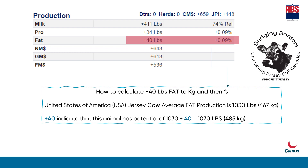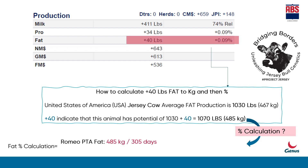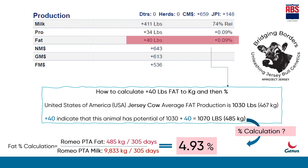Farmers also ask how much fat this is in percentage, since in India milk value is based on fat percentage. To calculate fat percentage, use this formula: take PTA fat, which is 485 kg, divide by PTA milk, which is 9,833 kg (the milk production of Romeo bull we calculated previously), then multiply by 100 to get the percentage. The fat percentage of Romeo bull daughters is 4.93%, meaning they are expected to give 4.93% fat with approximately 32 liters of milk per day — an excellent record.